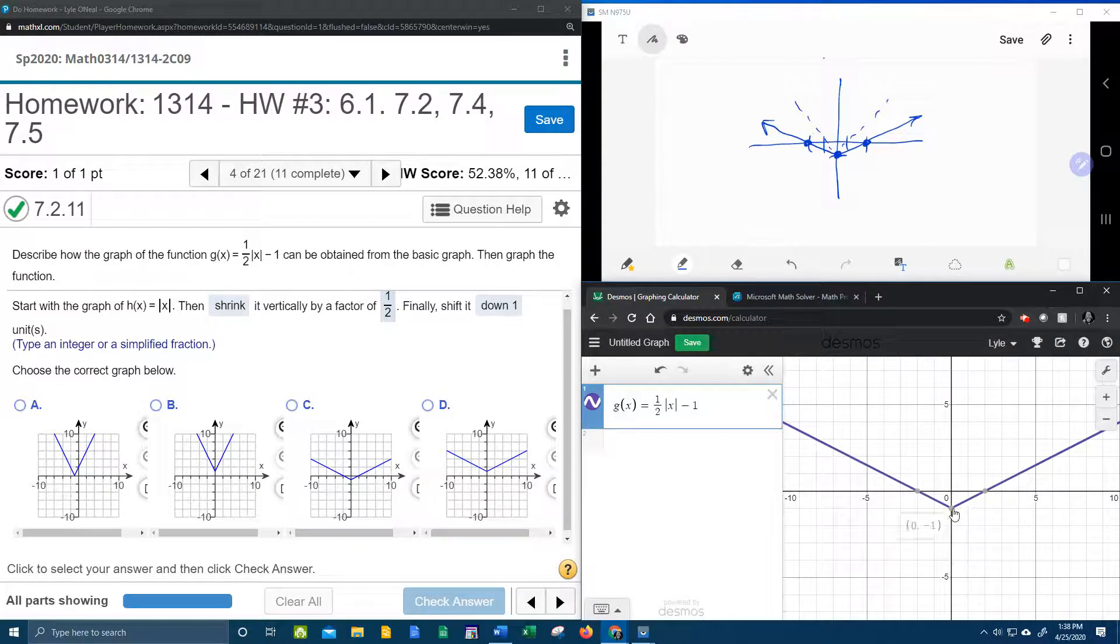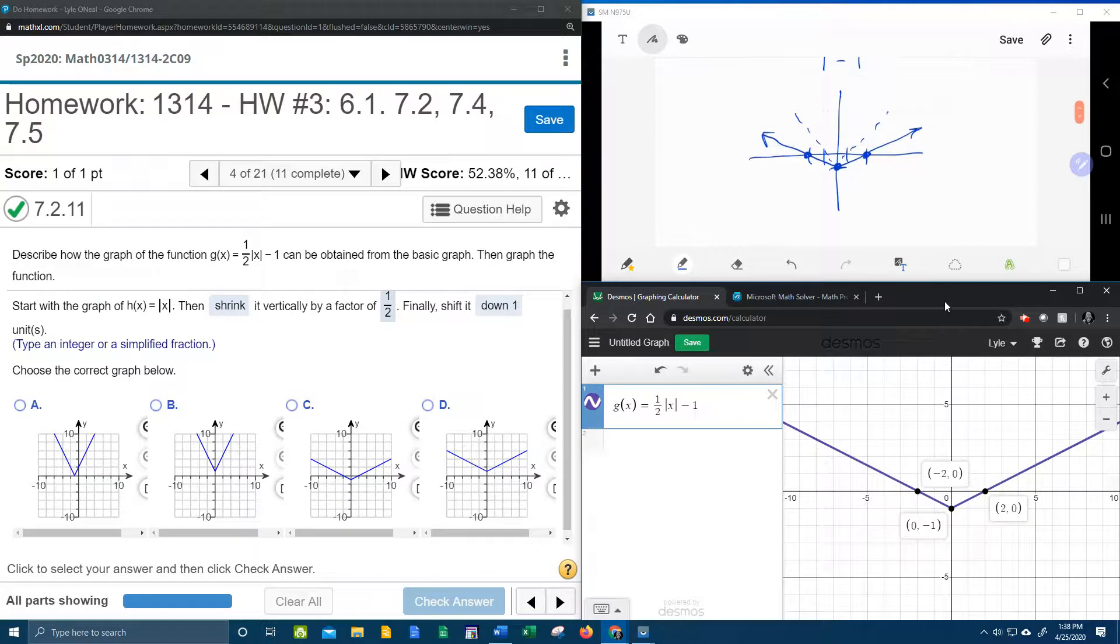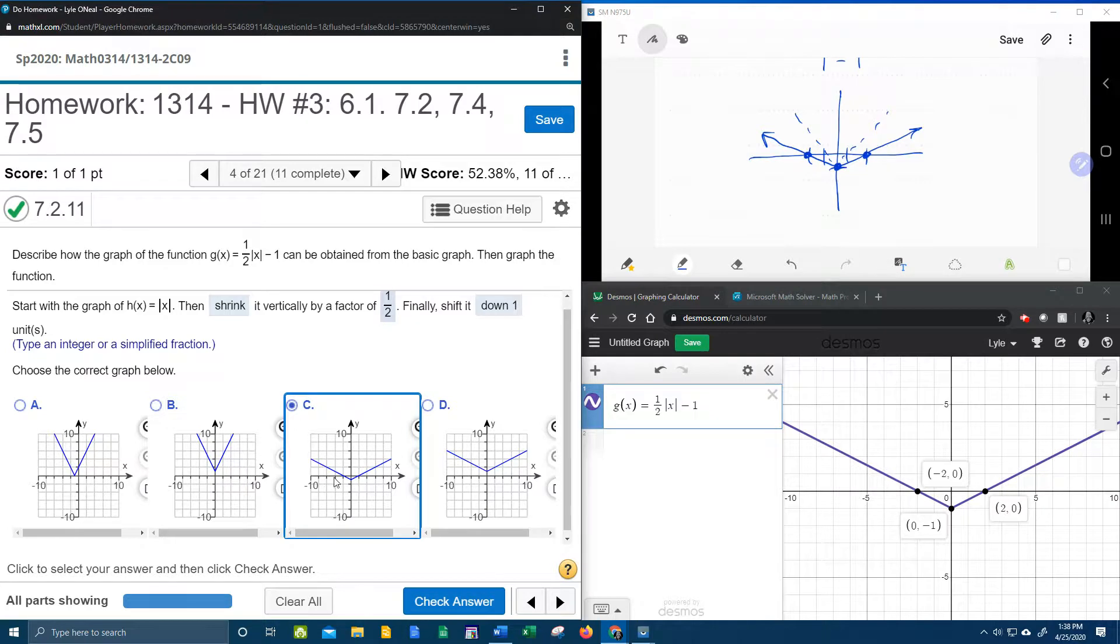And can you see that the graph here also does verify the ordered pairs that I got up here? The (0, -1), (-2, 0), and (2, 0). So this looks exactly like the graph that I got, which looks exactly like answer choice C.